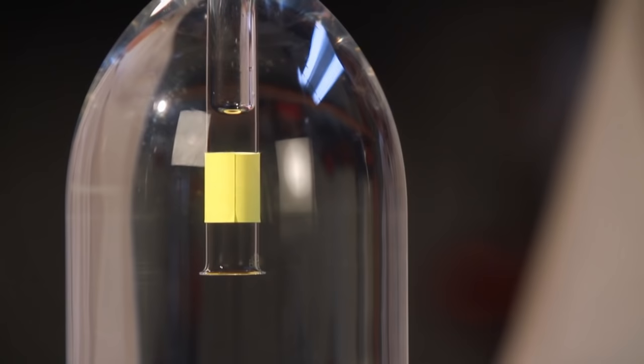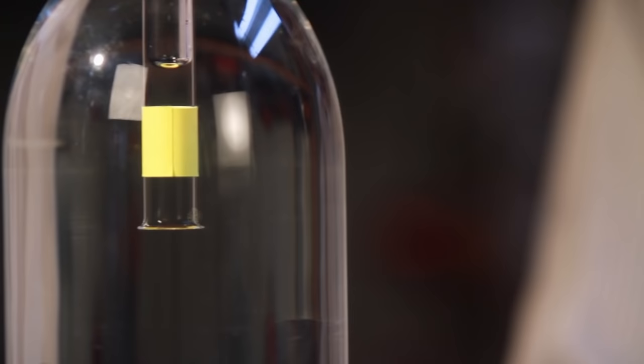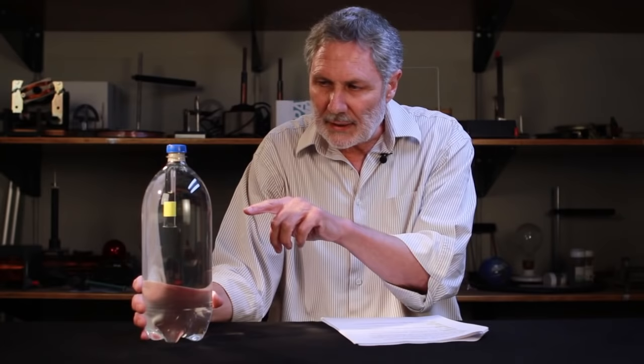Here is our Cartesian Diver apparatus. It is a flexible 2-liter soda bottle with an inverted glass test tube inside. The test tube is open and it contains some air. The yellow tape around the glass and the cork in the top there is just so that it can be clearly seen in a classroom.